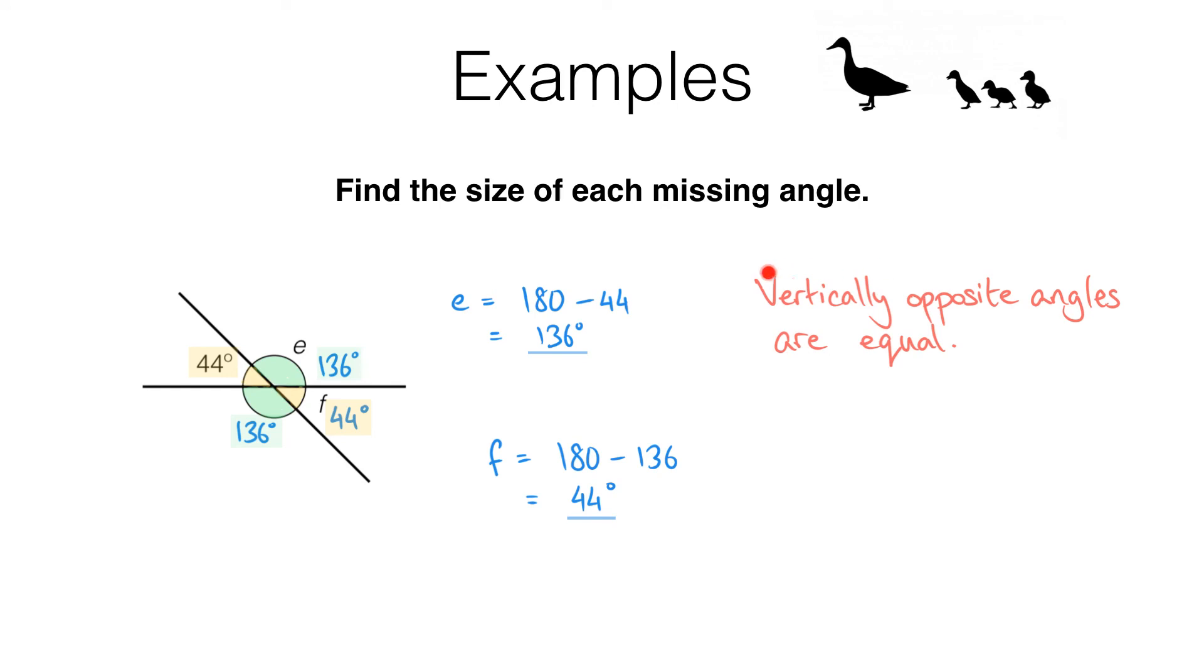By the way this word vertically confuses a lot of students here. In this context it's not about up and down vertical. It's used because these angles are opposite at a vertex. This point here is a vertex. And what we've got here are these two yellow angles opposite each other at this vertex. And we also have these two green angles opposite each other at the same vertex. And what we're saying is those ones that are opposite each other are equal. So the two green ones are the same and the two yellow ones are the same.